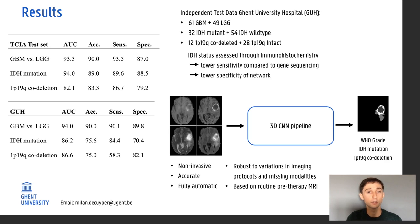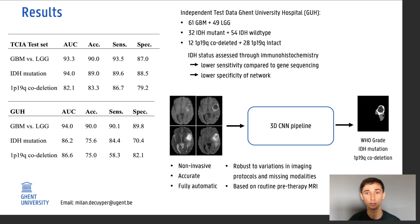However, a difference in specificity is observed for IDH mutation. This is because IDH status was assessed through immunohistochemistry on the Ghent University Hospital data, which has a lower sensitivity compared to gene sequencing used on the TCIA data. So some of the IDH mutant cases might be missed, resulting in false positives of the network and thus a lower specificity.